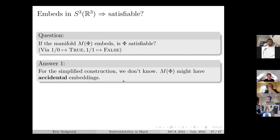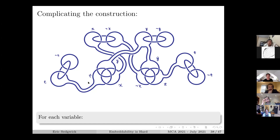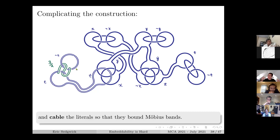Starting with a 3-SAT formula, I built the manifold - if the formula was satisfiable, the manifold embeds in S3. But I need to go back in the other direction: I need to show that if that manifold embeds in S3, then the formula was satisfiable. What I would hope is that if the manifold embeds in S3, some coefficients must be 1/0 which I can interpret as true. It turns out we don't actually know that to be true - the manifold may have accidental embeddings.